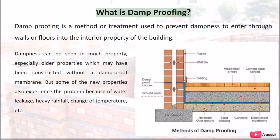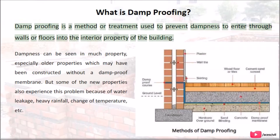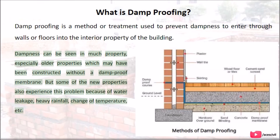What is damp proofing? Damp proofing is a method or treatment used to prevent dampness from entering through walls or floors into the interior of a building. Dampness can be seen in many properties, especially older properties which may have been constructed without a damp proof membrane. Some new properties also experience this problem because of water leakage, heavy rainfall, change of temperature, etc.